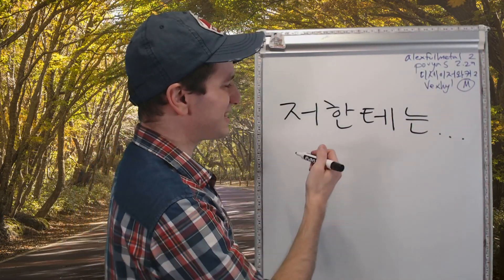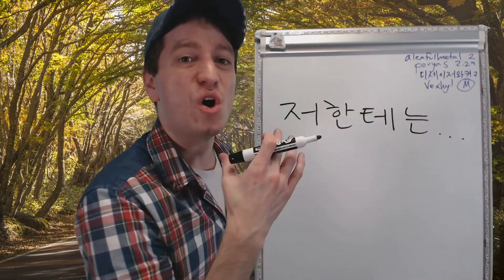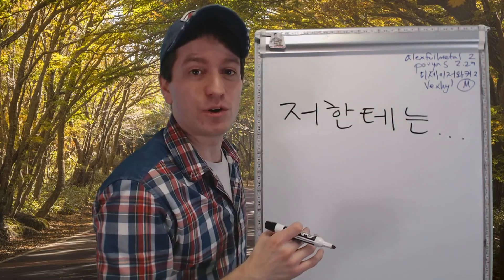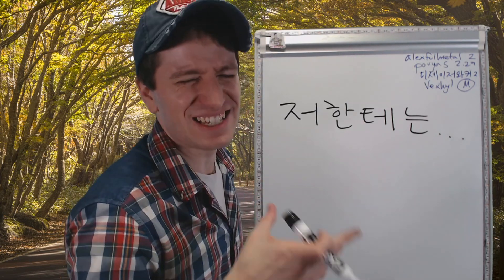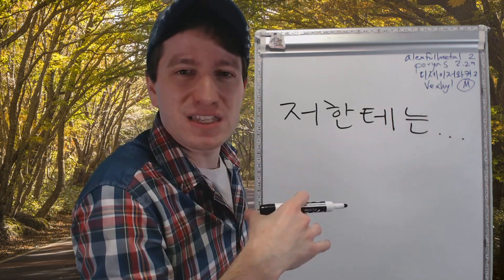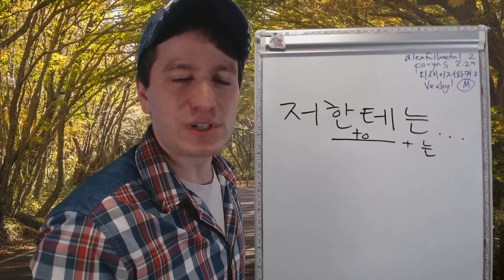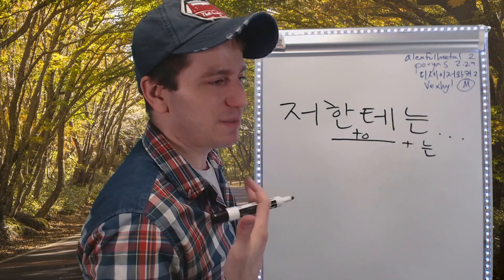저한테는. Notice that it's not quite 저한테, 저한테는. It's 저한테. There's a little bit of that ㅎ sound in here when you say it. It's not 저한테, but it's not 저한테. So it's really soft. It's there, but it's not strong. 저한테는, so to me, this is one way that you can start to talk about your opinion. 저한테는, to me, in my opinion.